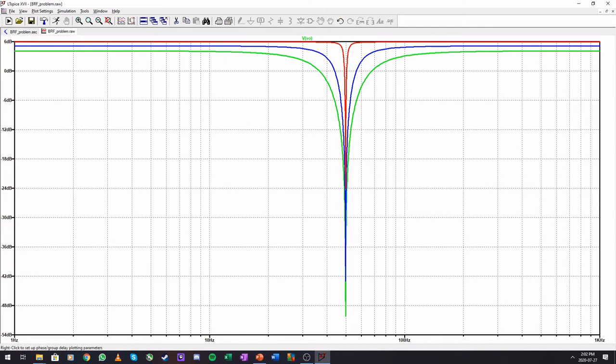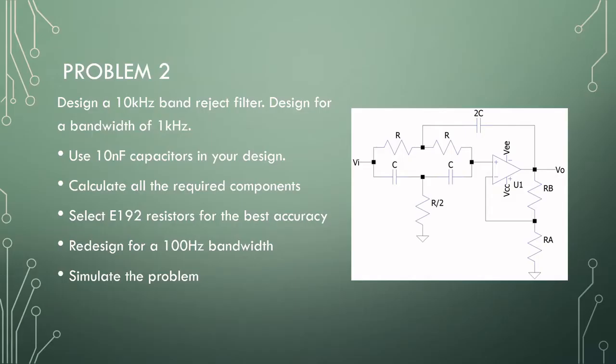Let's go over to the second problem. Our second problem is to design a 10 kHz band-reject filter with a bandwidth of 1 kHz. We should use 10 nF capacitors in our design and E192 resistors. And we should redesign this for 100 Hz bandwidth. Also, simulate the problem.